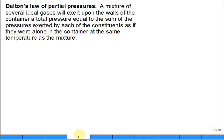Dalton's Law of Partial Pressures. A mixture of several ideal gases will exert upon the walls of a container a total pressure equal to the sum of the pressures exerted by each of the constituents as if they were alone in the container at the same temperature as the mixture.